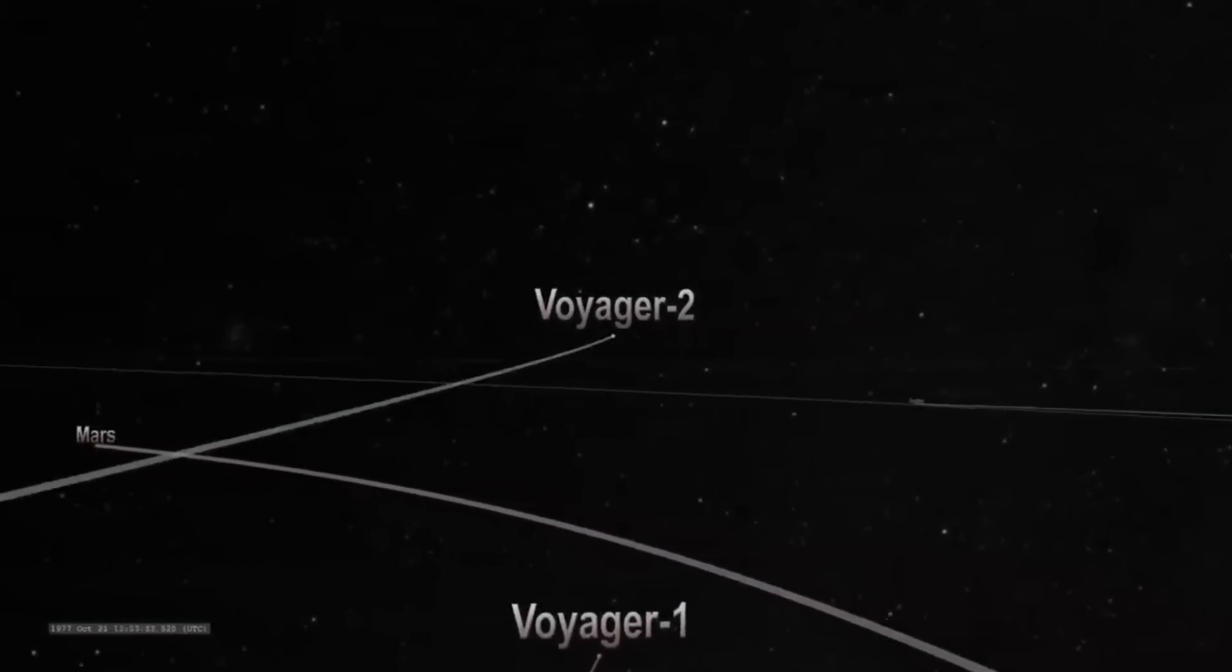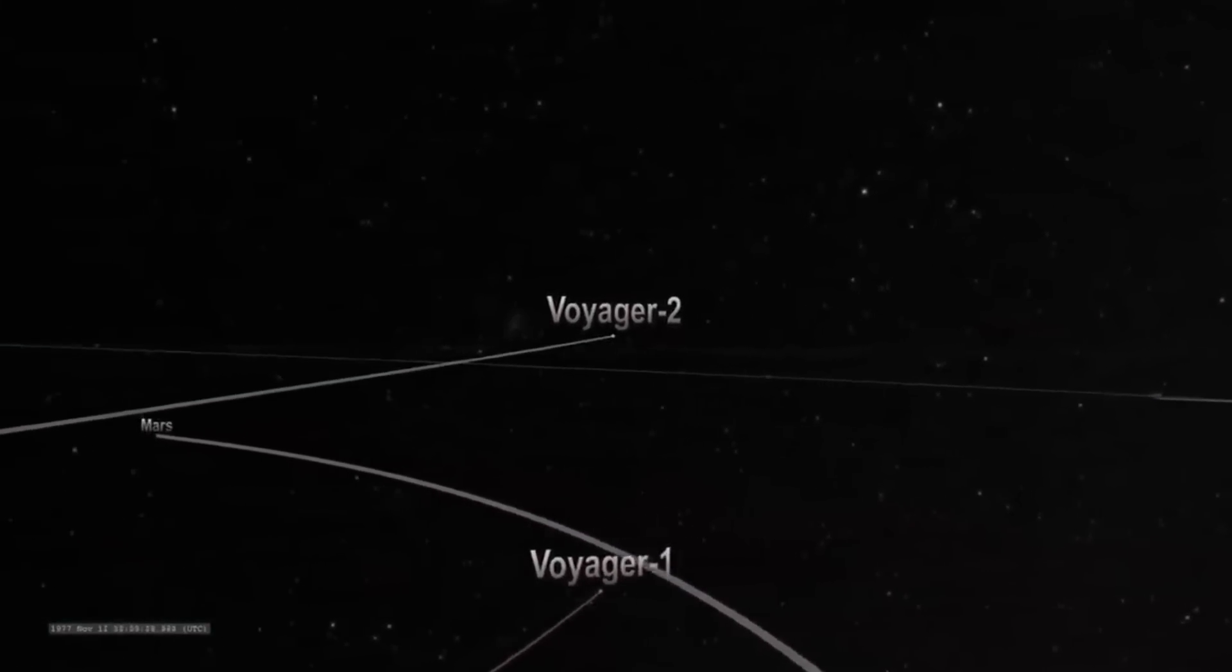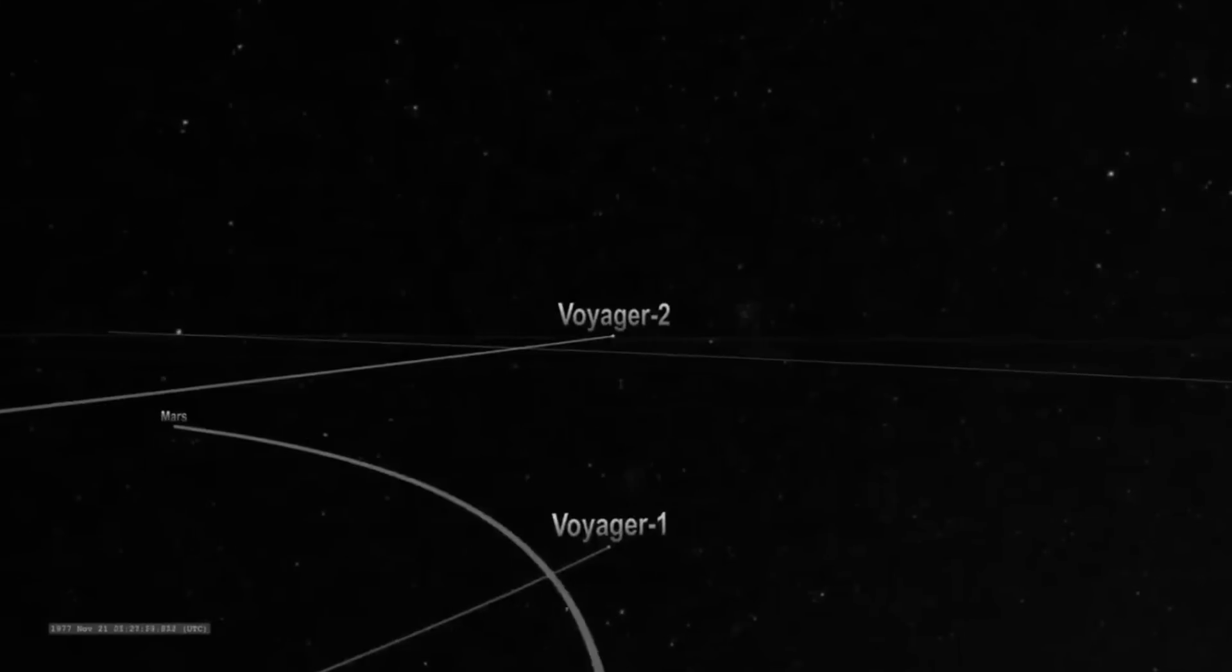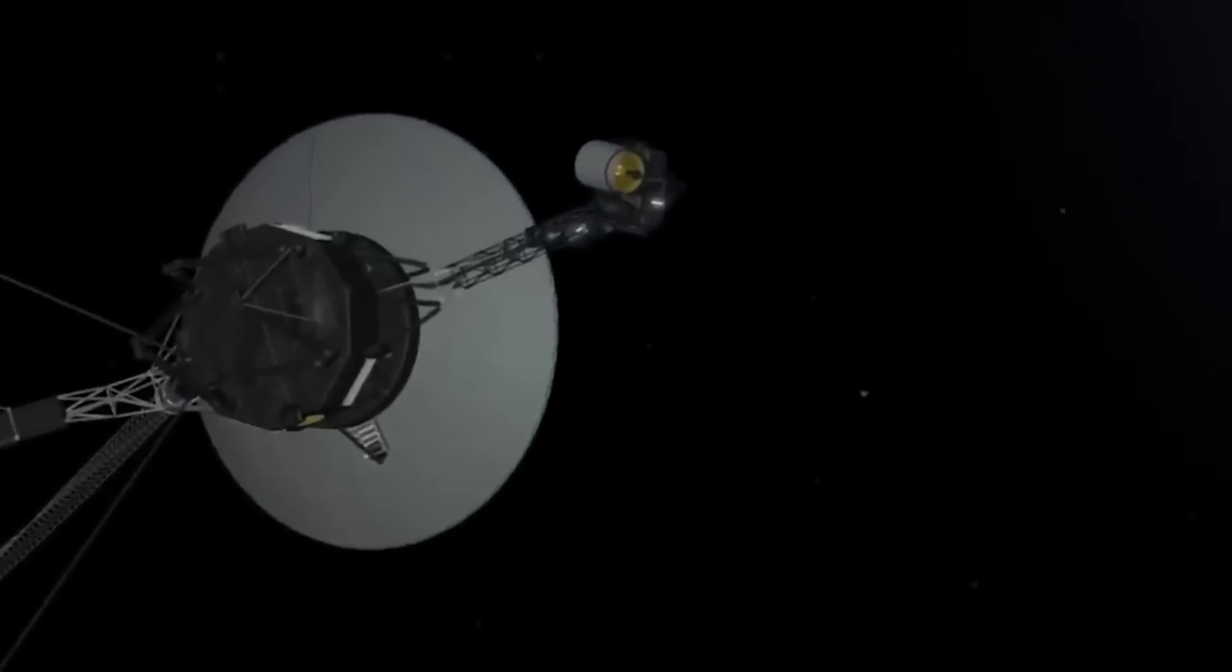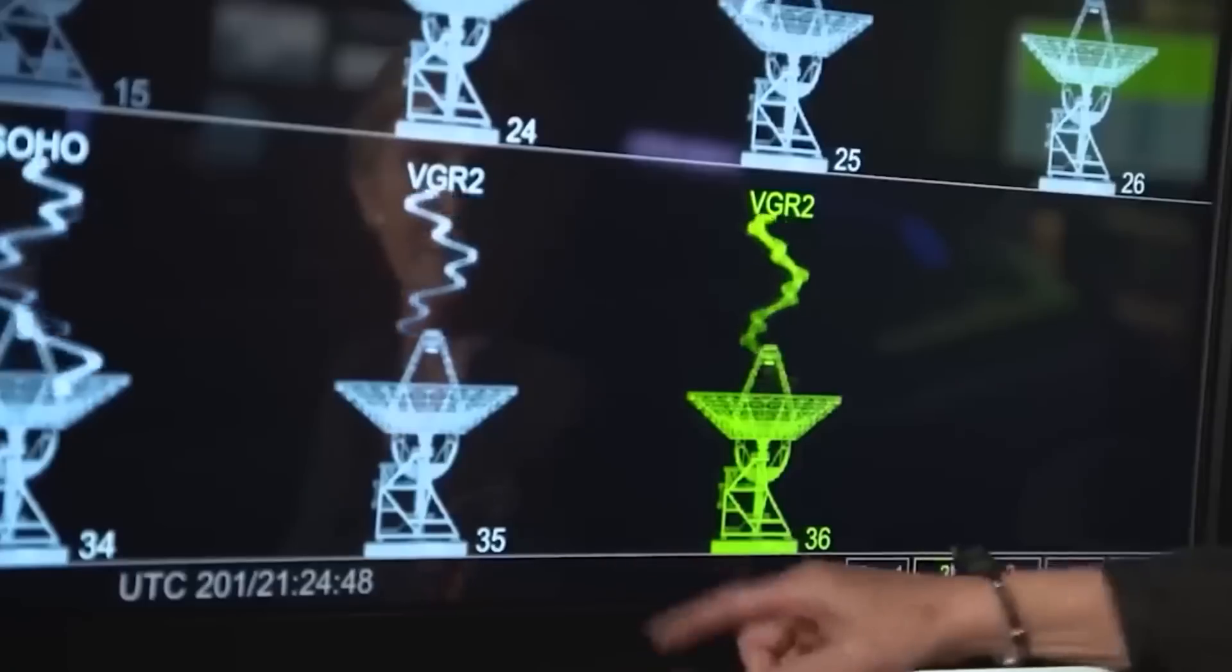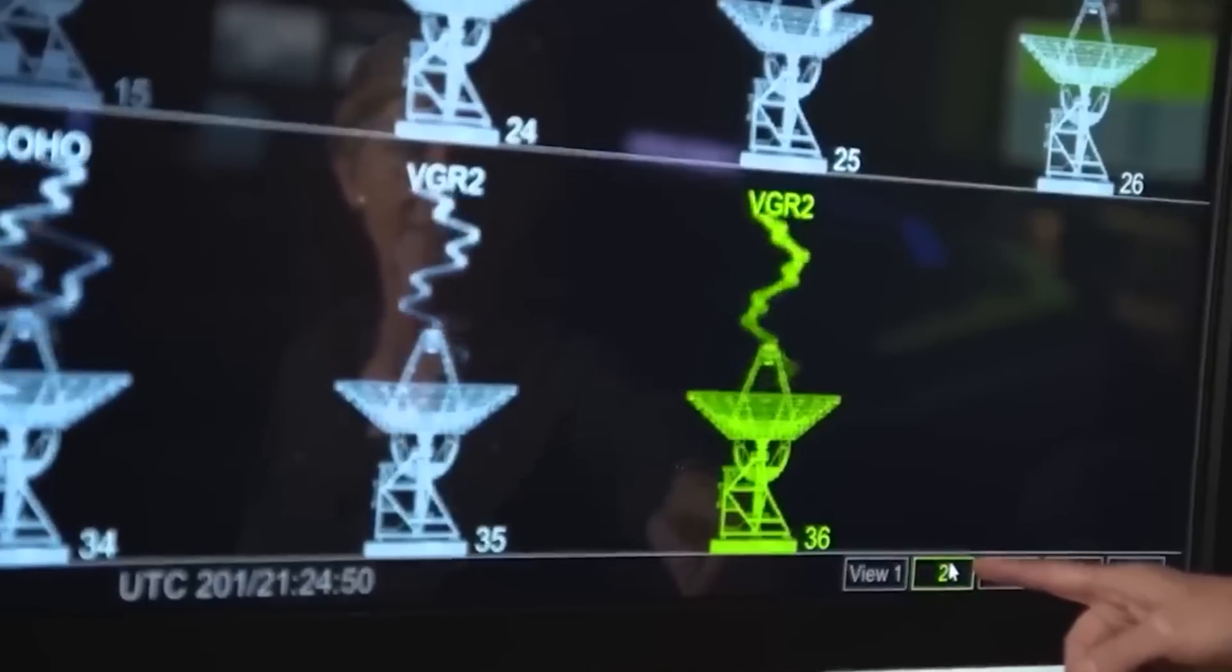In 2018, Voyager 2 also crossed the heliopause. On November 5, this time there was no doubt. The spacecraft's plasma instrument was working properly, and recorded the increase in the density of particles, such as protons, electrons, and other charged particles.